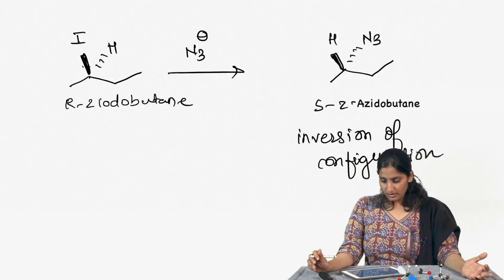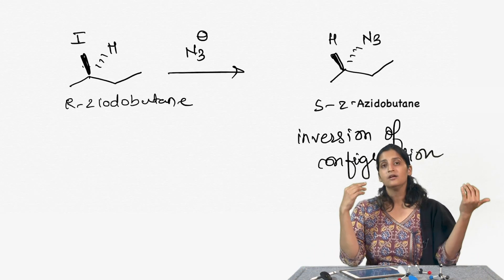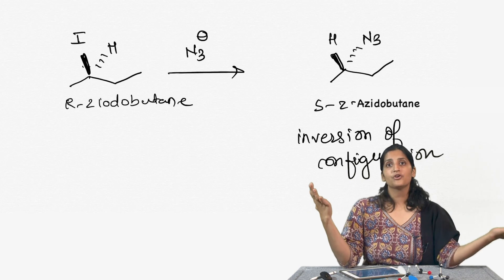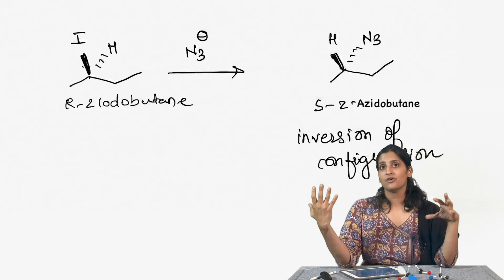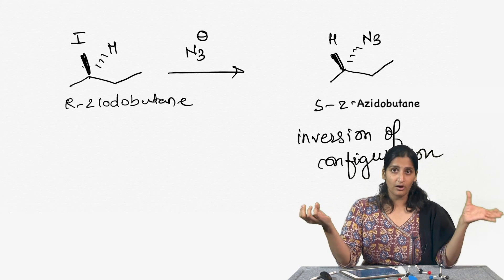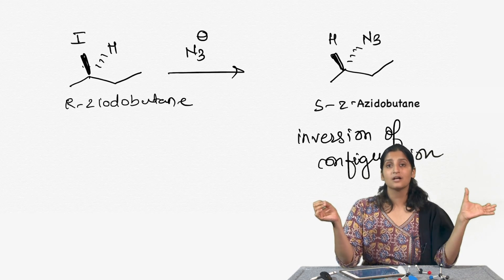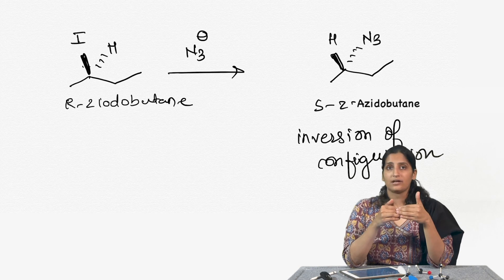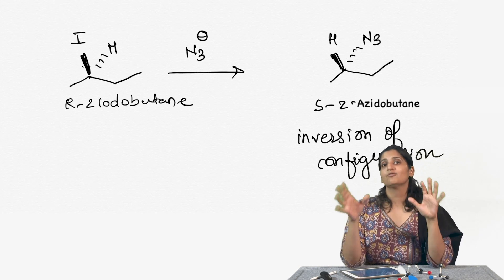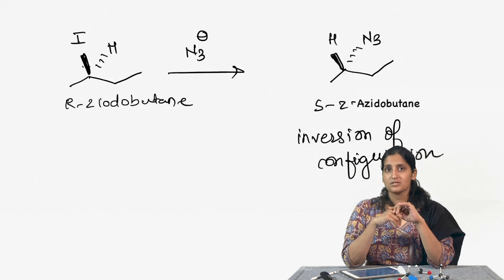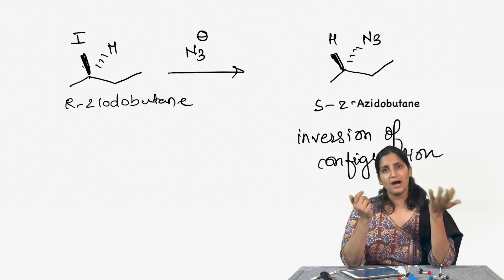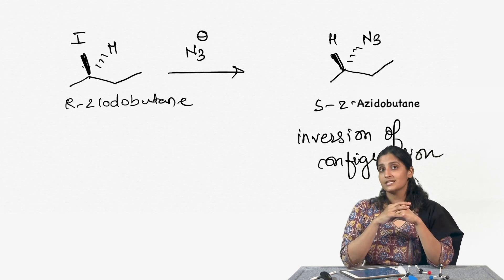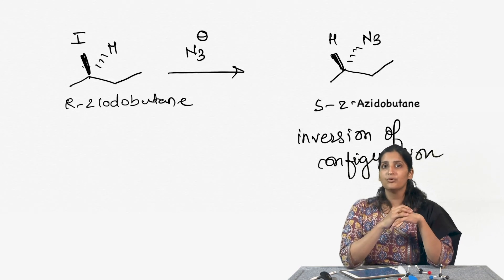Because the incoming nucleophile attacks from the opposite side of the leaving group, you almost always see inversion of configuration: the new carbon-nucleophile bond is opposite to the carbon-leaving group bond. For SN2 reactions, we always see full inversion of configuration. In contrast, SN1 reactions gave a mixture — partial inversion and partial retention of configuration — whereas SN2 gives full inversion of configuration.